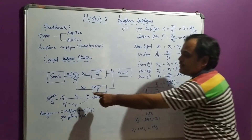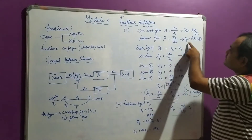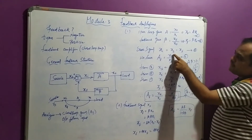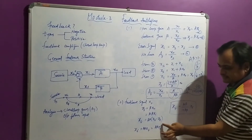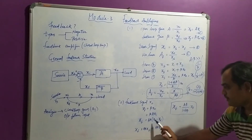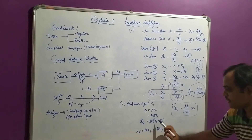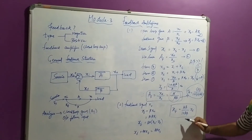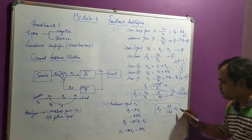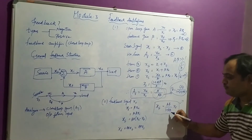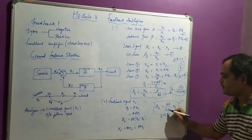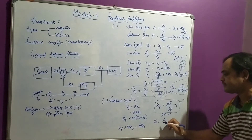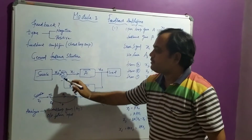Now for the second discussion: output follows the input. The feedback signal XF equals beta times X0. X0 equals A times XI, and XI equals XS minus XF. Cross multiplying, we get XF times (1 plus A·beta) equals A·beta times XS, so XF equals A·beta divided by (1 plus A·beta) times XS. If A·beta is far greater than 1, the numerator and denominator terms cancel, giving XF equals XS — the feedback signal equals the source signal.